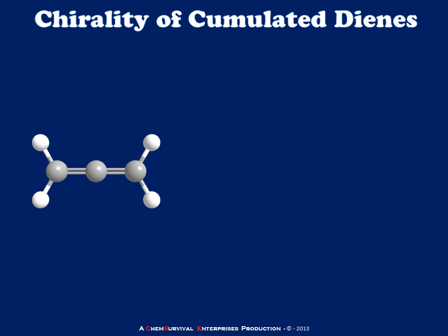You may ask yourself, how is it possible that a molecule, which is apparently flat, could possibly be chiral? In order to answer this question, we're going to have to turn this molecule on its side and take a look at the molecular orbitals which would exist if it were in fact in this configuration.